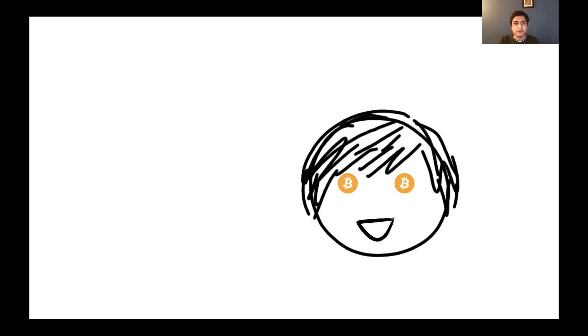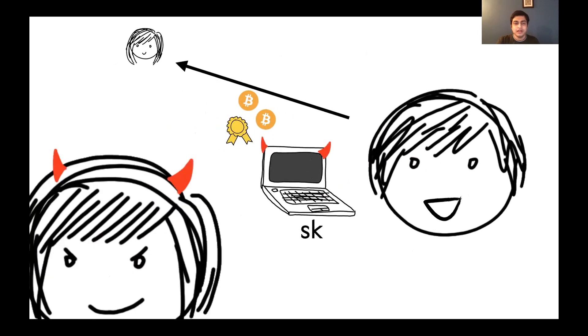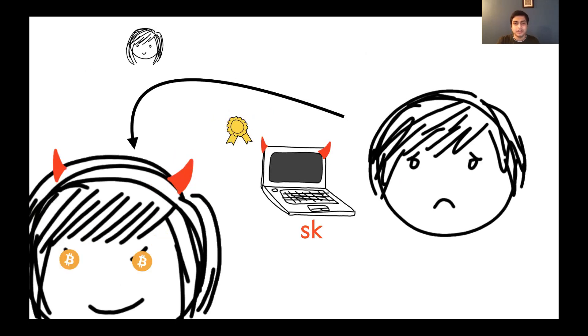Let's say Bob has some cryptocurrency that he would like to send over to Alice. He takes out his laptop, on which there lives some signing key. He pushes a button and produces a signature under this key to attest to this fact. If Bob's laptop gets hacked, an attacker could then steal his signing key and divert funds to herself.